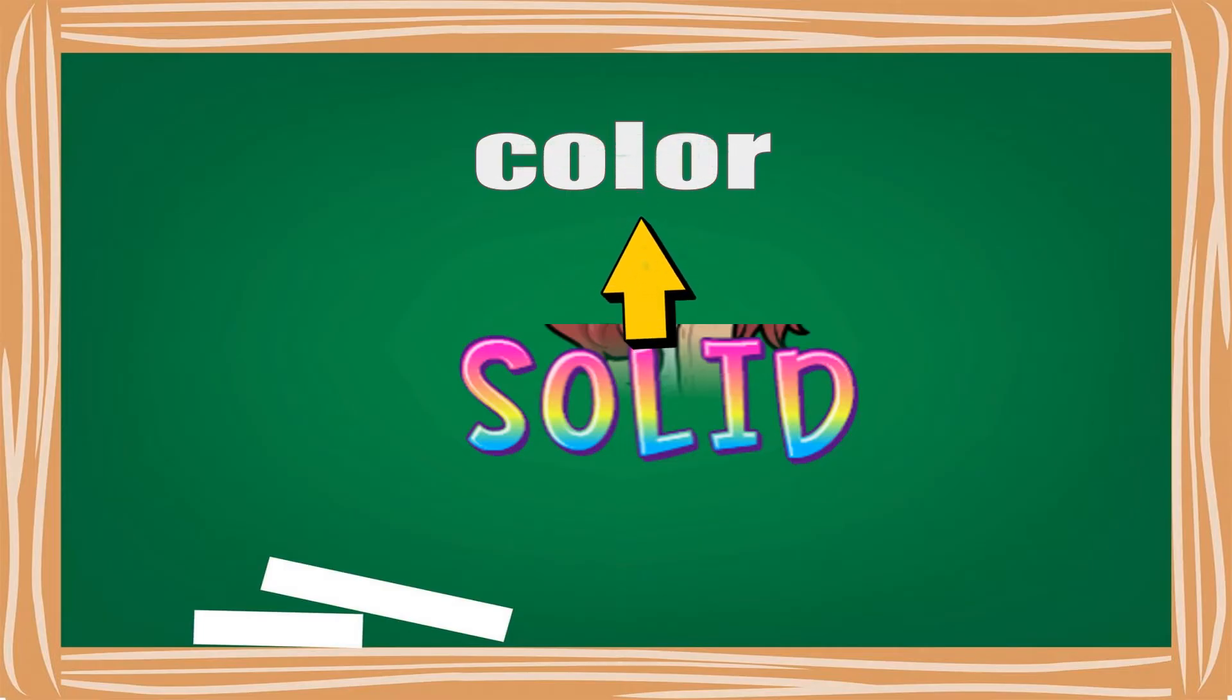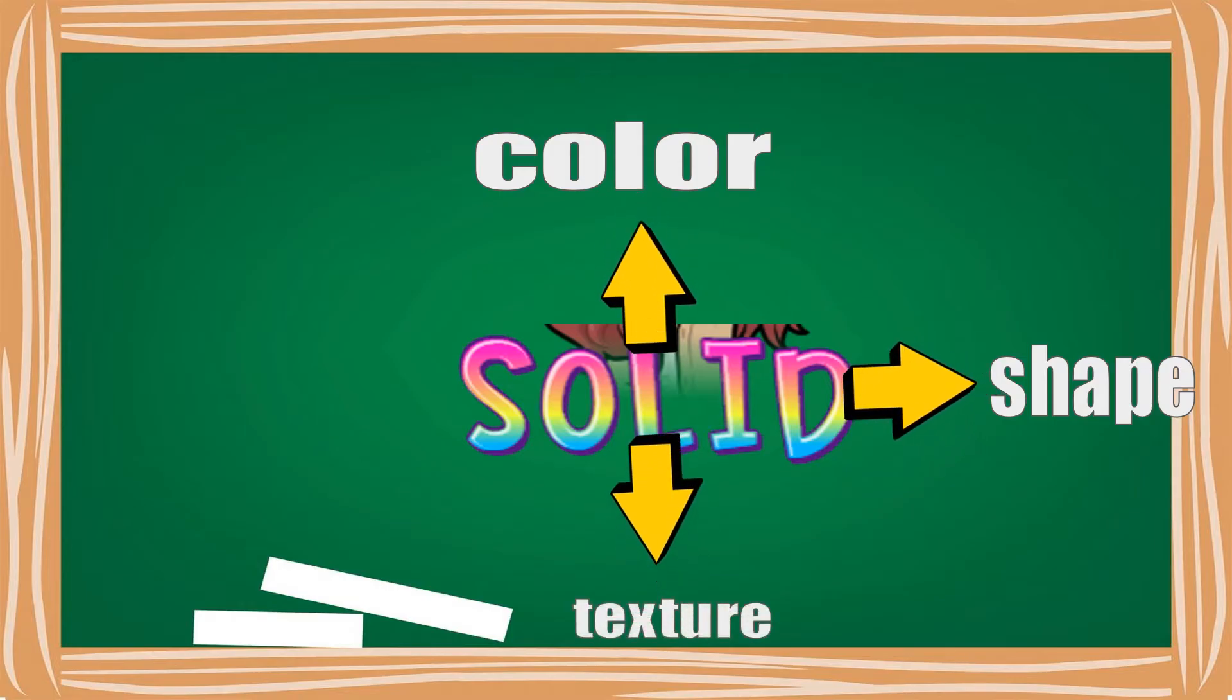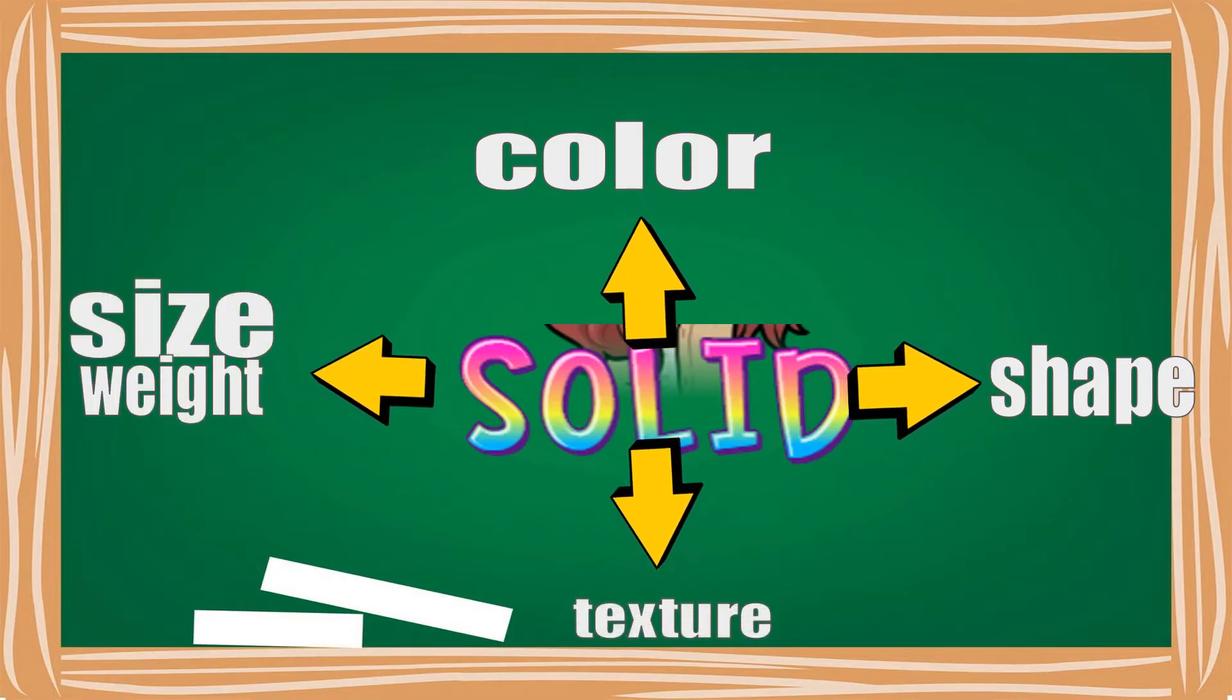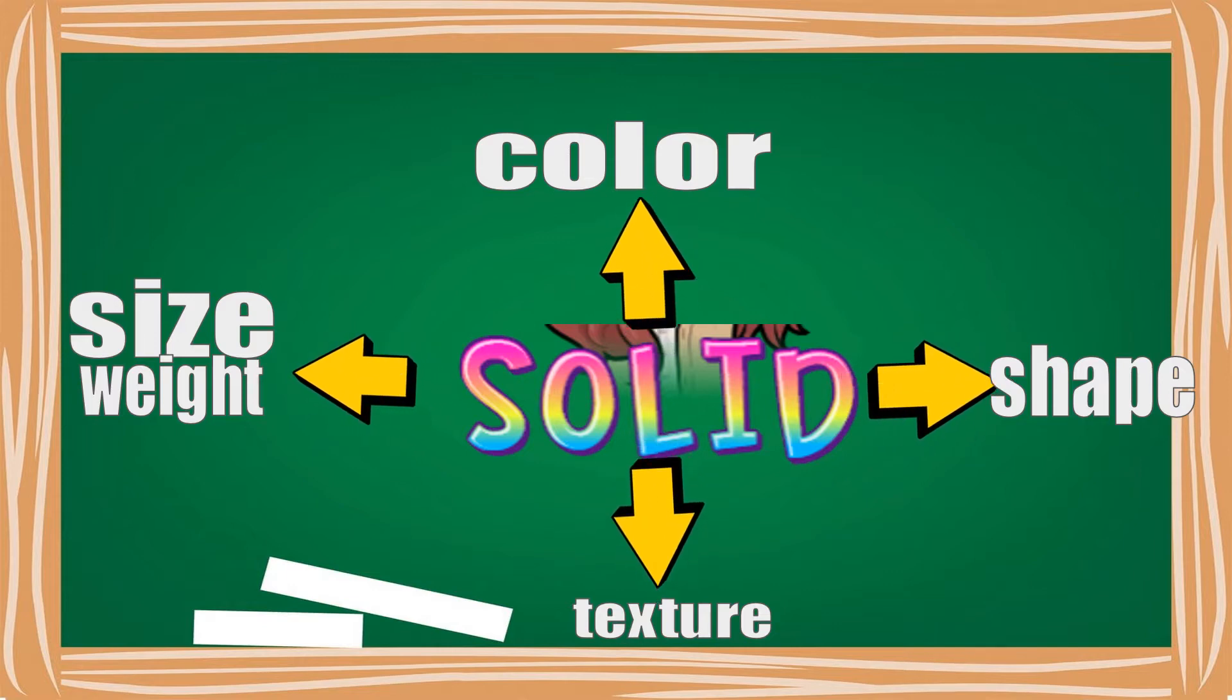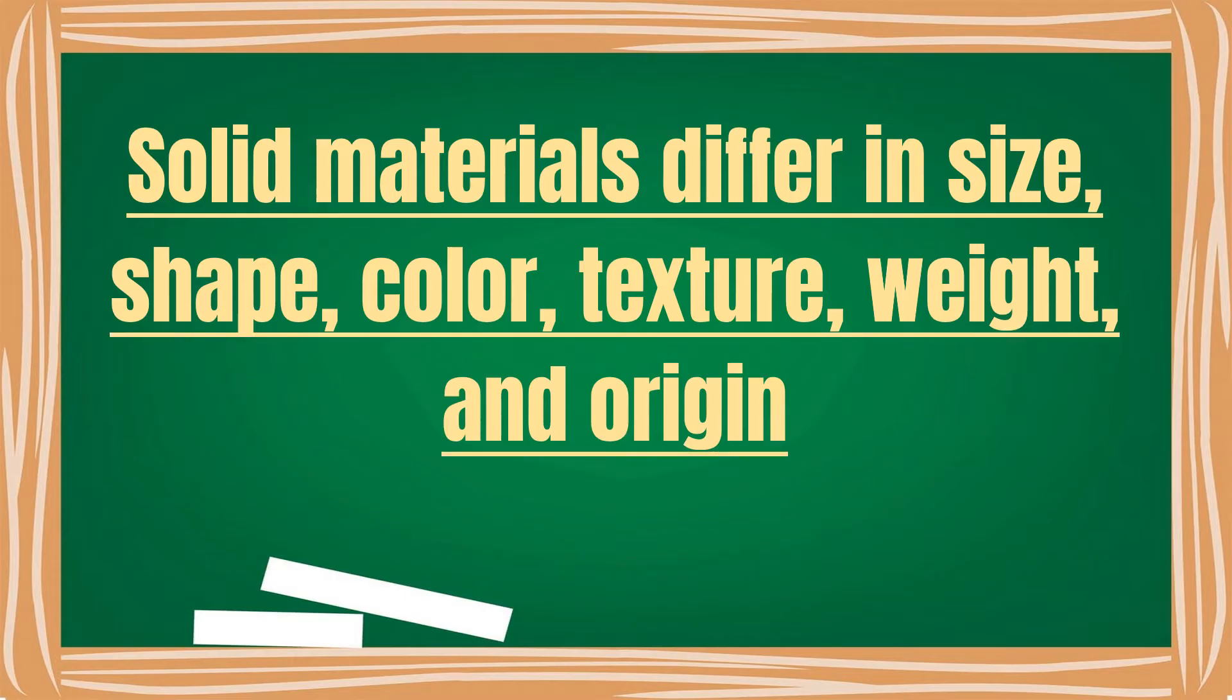When we say solid, solid has color, solid has shape, solid has texture, and solid has size and weight. Solid materials differ in size, shape, color, texture, weight, and origin.